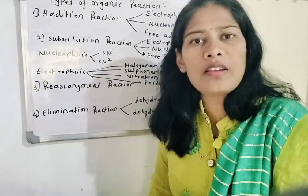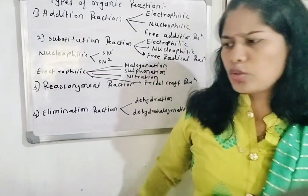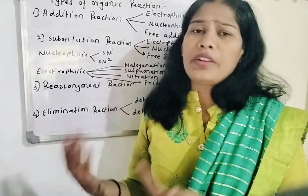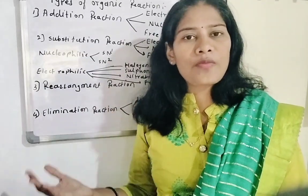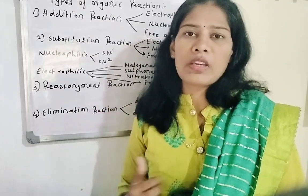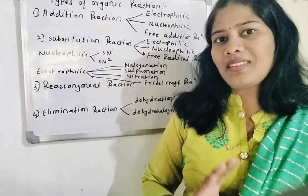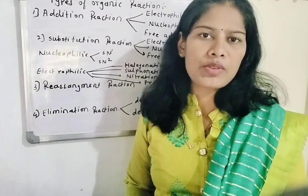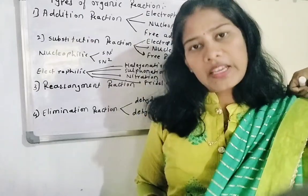If you have learned these properly, you can solve any kind of chemical reaction. If there is any reactant, you can easily find the product. If you have a product and not the reactant, you can also find the reactant of the chemical reaction. But before that, the major sub-types must also be clear. In this lecture, I am going to tell you how many types there are, and each type will be discussed one by one in the next lecture.